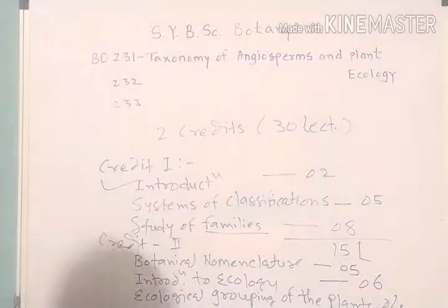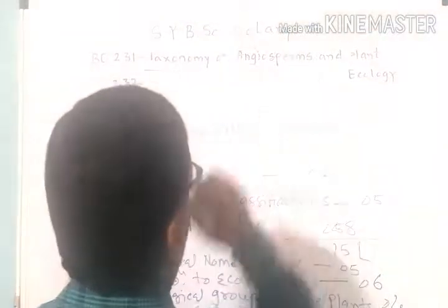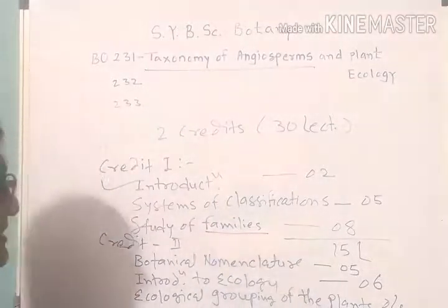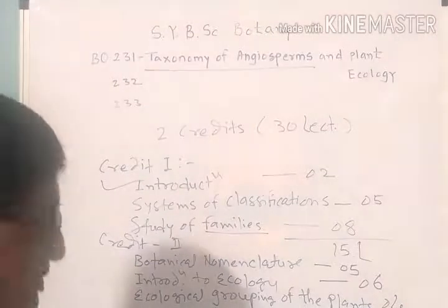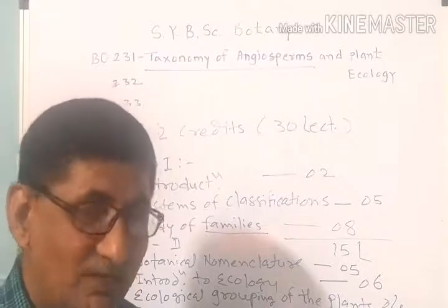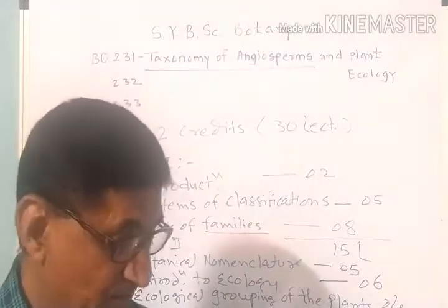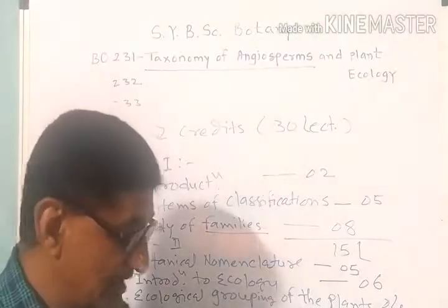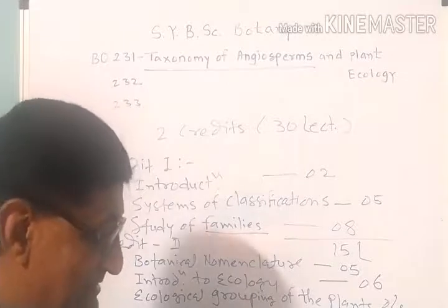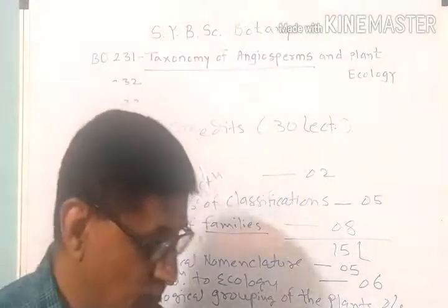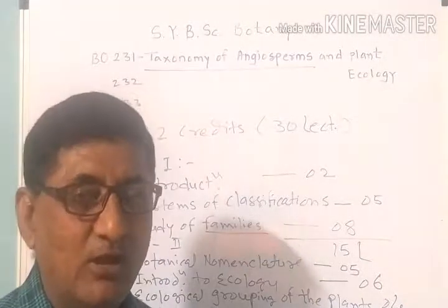So these four topics — introduction, systems of classification, study of families, and botanical nomenclature — belong to the Taxonomy of Angiosperm, which is the first part of your paper first. The second part of your paper first is Plant Ecology. Under introduction to Plant Ecology, you have to see the definition, concept, and scope of ecology, why ecology is an interdisciplinary approach, and the meaning of autecology and synecology. You also have to learn species diversity, types of diversity, methods of vegetation sampling, genetic diversity, ecosystem diversity, and biodiversity hotspots of India.